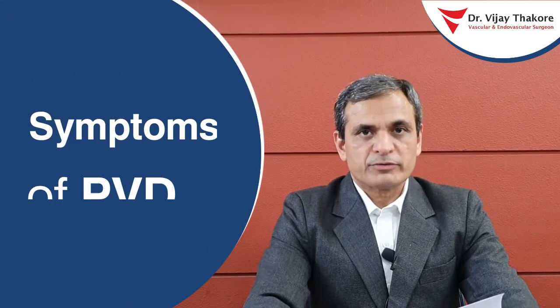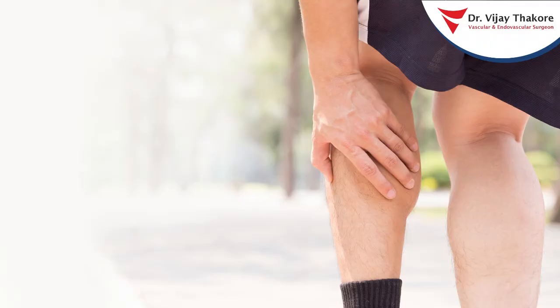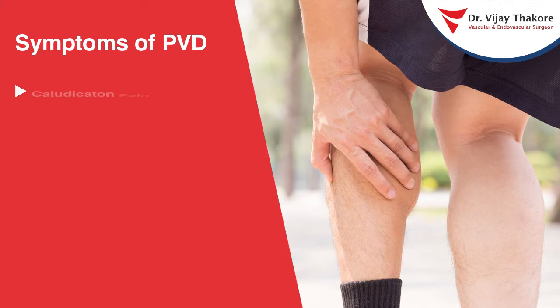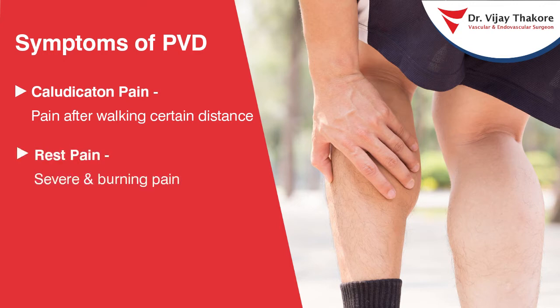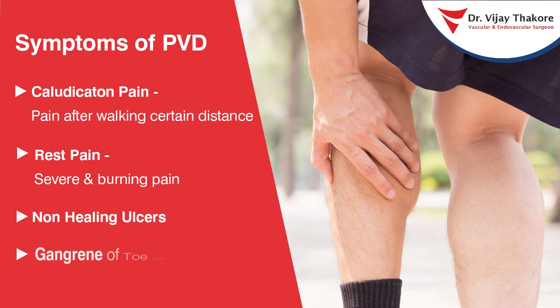What are the symptoms of peripheral vascular disease? To begin with, a person would develop claudication pain — meaning pain when walking after a certain distance — and that pain gets relieved on taking rest for a while. If you do not treat at this stage and do not control risk factors, the disease would progress and lead to a condition called rest pain, wherein the pain is a very severe burning kind of pain, worse at night, so bad that a person cannot sleep comfortably. Other symptoms of PVD are non-healing ulcers over the foot or some kind of gangrene of a toe, forefoot, or foot.